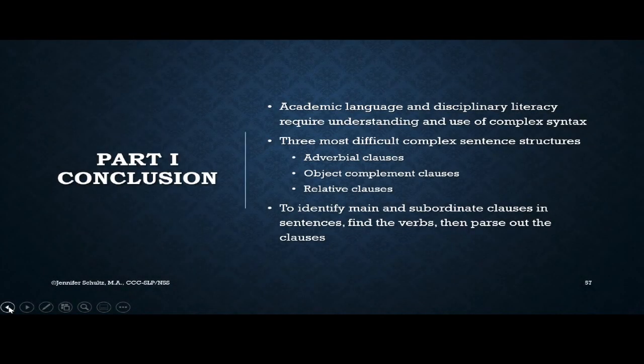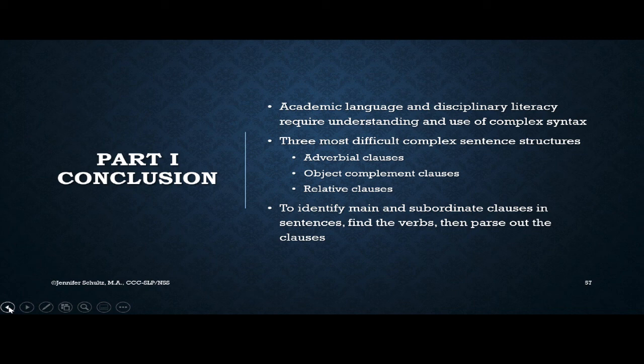To recap Part 1, we talked about academic language and disciplinary literacy and how we have a heavy weighting of complex syntax in these types of conversations and texts — especially in texts that children encounter in school. We learned that the three most difficult complex sentence structures are adverbial clauses, object complement clauses, and relative clauses. We also determined that to find main and subordinate clauses, the first thing we need to do is find the verbs, and then we can parse out those different clauses.